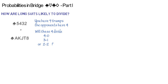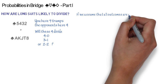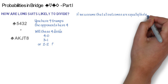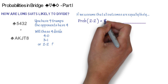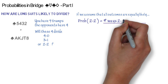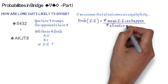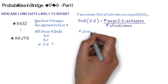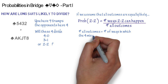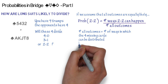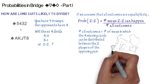Let's calculate. If we assume that all outcomes are equally likely, the probability for a 2-2 distribution is given by the number of ways in which 2-2 can happen divided by the number of all possible outcomes. The total number of outcomes is the number of ways in which the 4 missing cards can be distributed between the two players of the opposing pair.